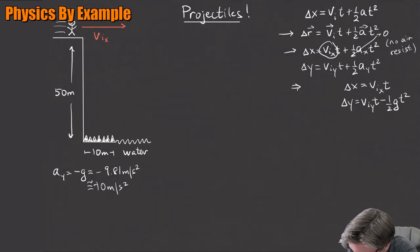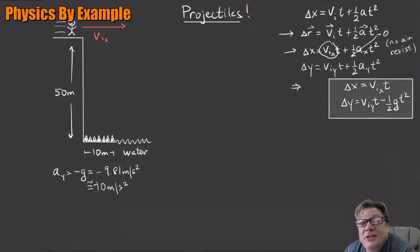Some people make the mistake of calling g itself negative - that's horribly confusing. My advice is don't do that. Call g 9.81 and take account of the direction with that minus sign. So delta y equals v initial y times t minus one-half g t squared. Here are our equations we're going to use over and over for projectile motion.